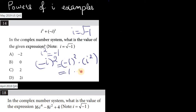And so this would be negative 1 squared is just a 1. And we multiply that with an i squared. So it's the same as i squared, which is a negative 1.